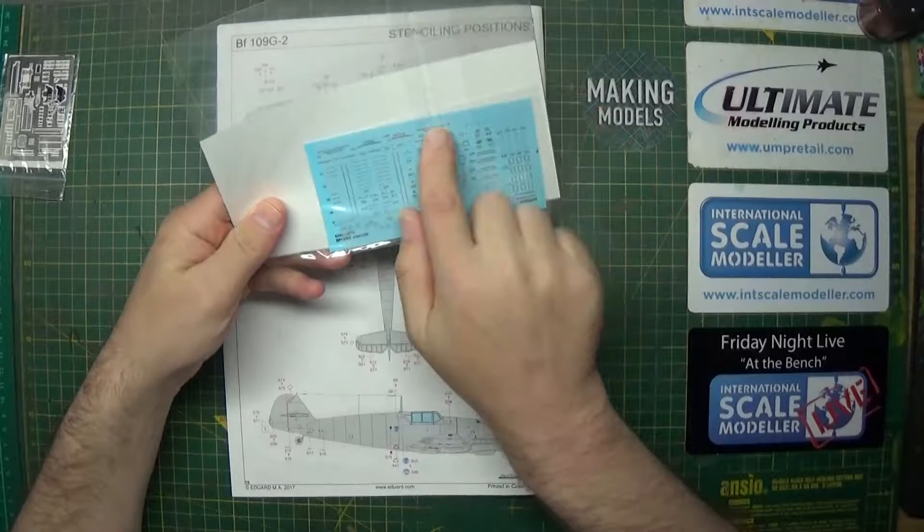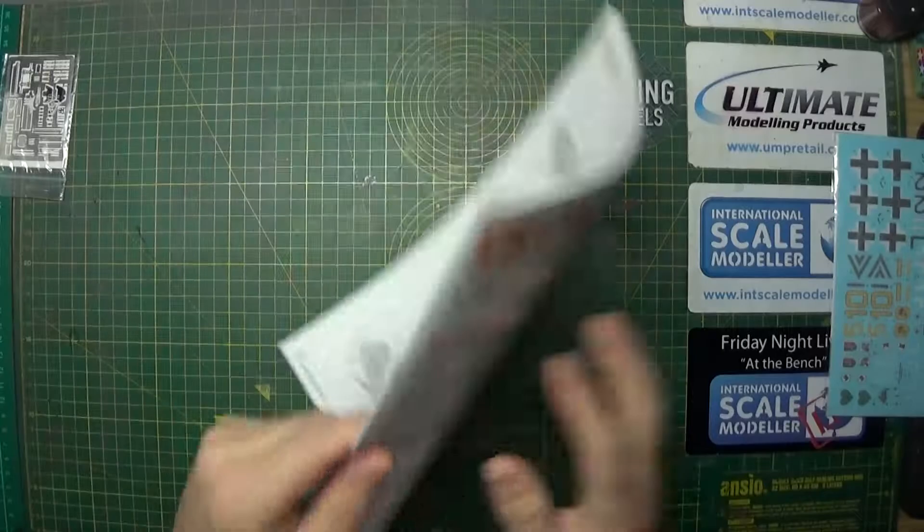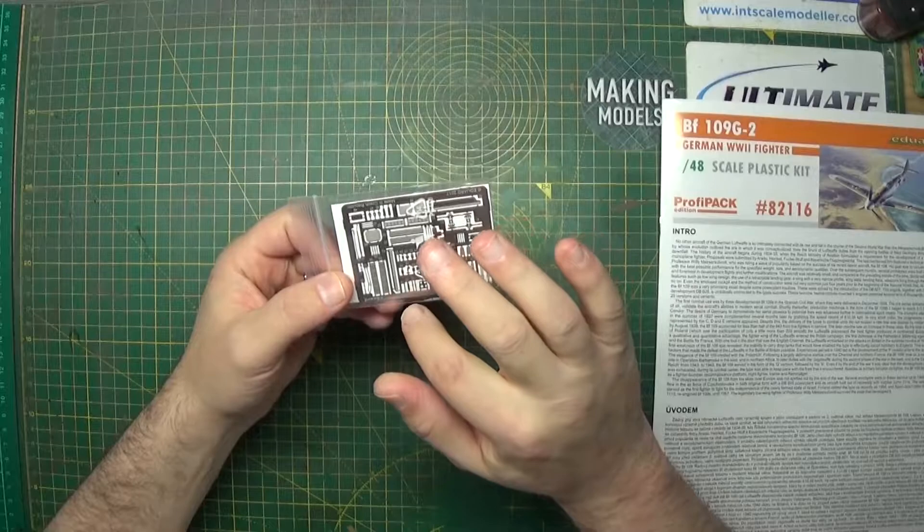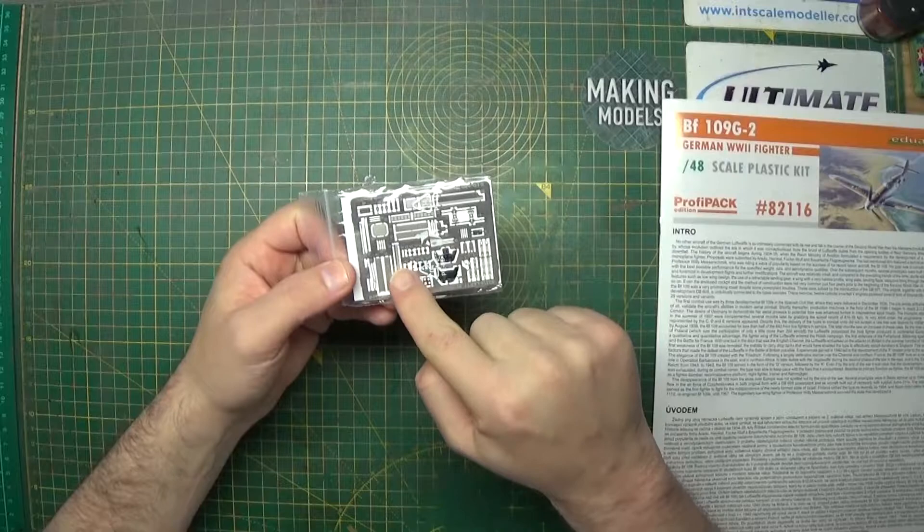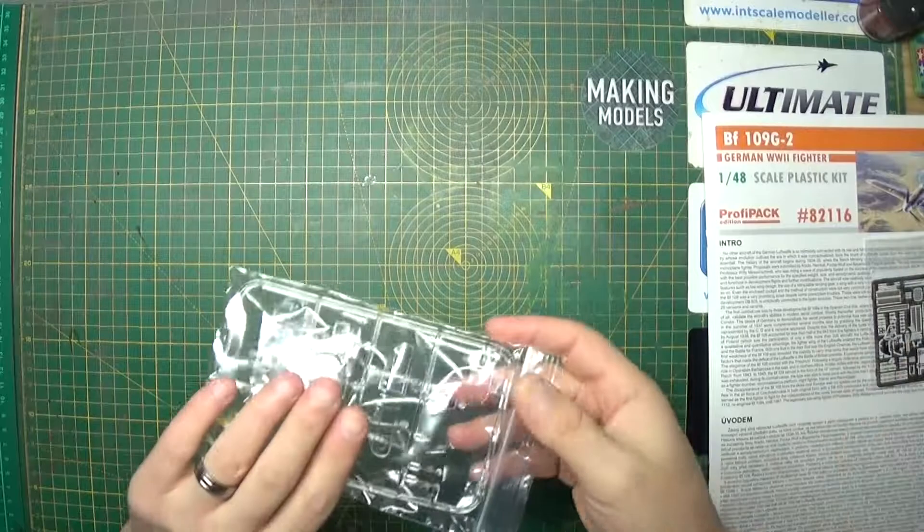And then we're on to the stencils, which we have here. It's a whole pile of very, very small stencils, and of course the standard larger ones. So that's the instructions. We also have some photo etch—some colored photo etch. Never used colored photo etch before. Quite a few bits and pieces on here. Got the seat belts, they're colored for the dials, all there, and some other bits and pieces.